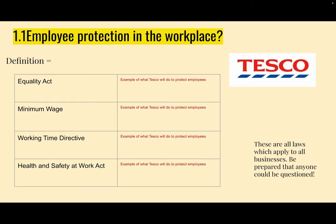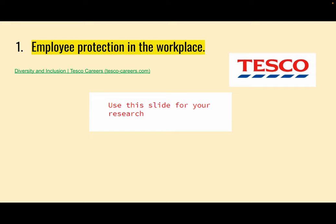I've put a note there: these are all laws which apply to businesses, be prepared that any could be questioned. On the next slide, I've added a link taking you straight to the diversity and inclusion section at Tesco's. Read around that page and then summarise it in your own words — what specifically does Tesco's do to protect their employees when it comes to diversity and inclusion? Remember, diversity and inclusion is linked to the Equality Act — it is what they've had to put in place because it is a legal requirement.